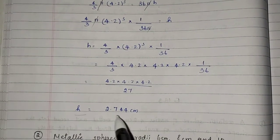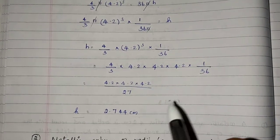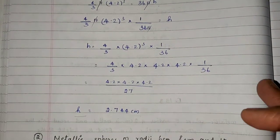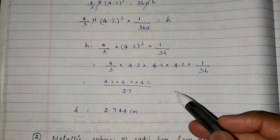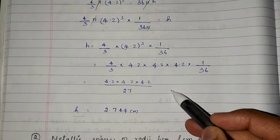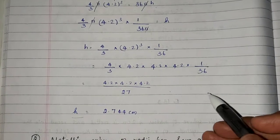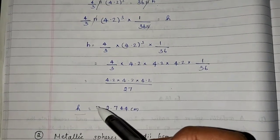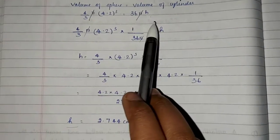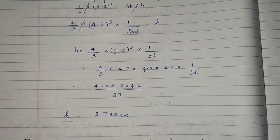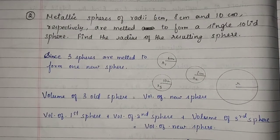So the height is 2.744 cm. To summarize: when a shape is melted and recast, we equate the volumes and solve for the unknown. The height of the cylinder is 2.744 cm.